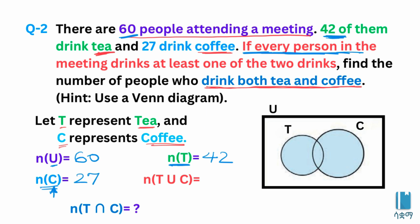The phrase 'every person in the meeting drinks at least one of the two drinks' is important. It means that every person drinks either tea or coffee, which means T union C equals the universal set. So the number of elements in T union C equals 60.